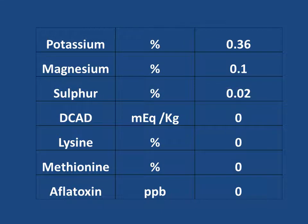Dietary Cation Anion Balance (DCAB): meq per kg: 0%. Lysine percentage: 0%. Methionine percentage: 0%. Aflatoxin: parts per billion: 0%.